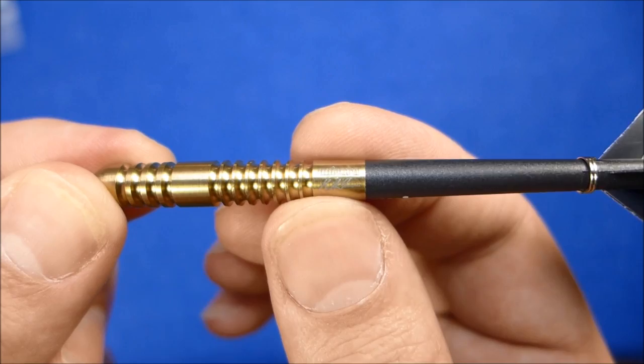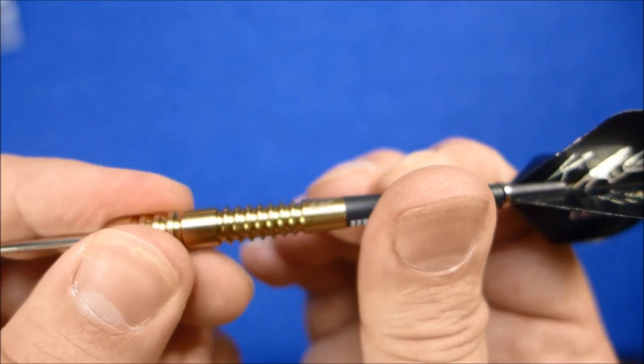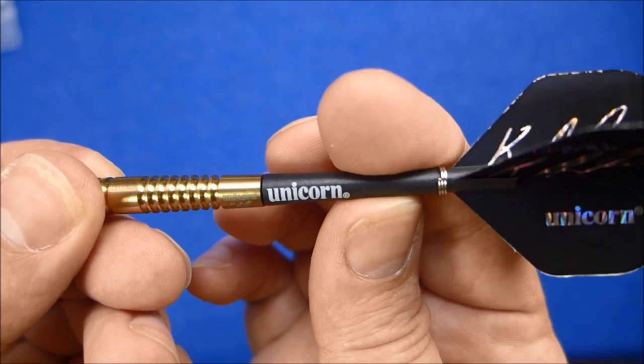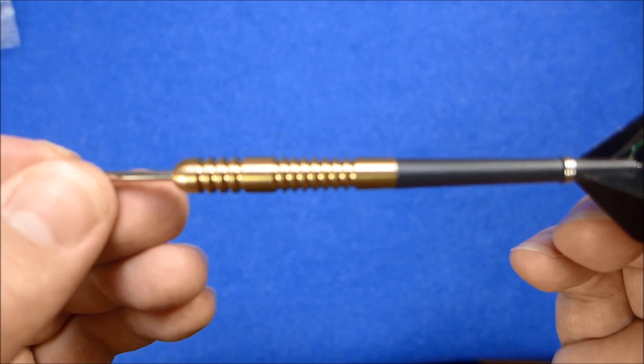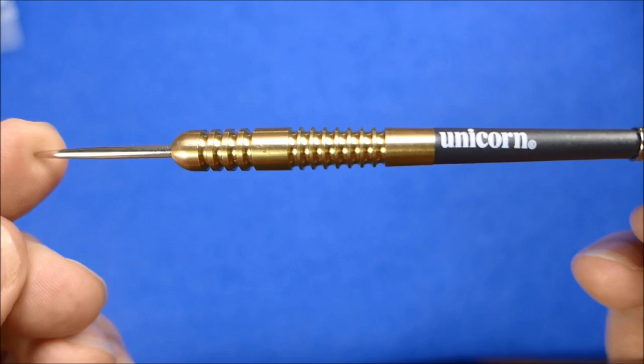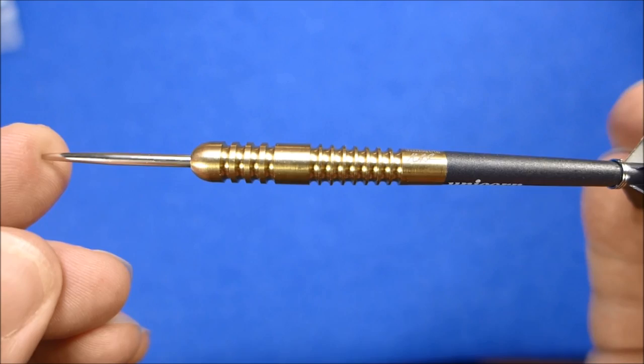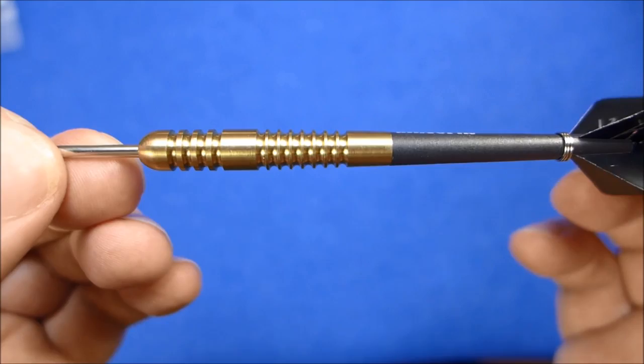On the rear smooth section you've got the Unicorn logo and Kyle Anderson signature. It's fitted with the Unicorn gripper shafts and you've got the Kyle Anderson signature standard shape flights. So I'll just let you look at the dart for a bit then I'll put the detail pic up.